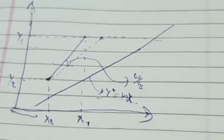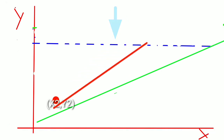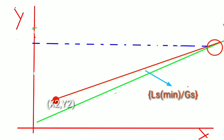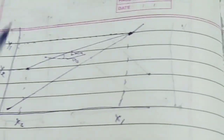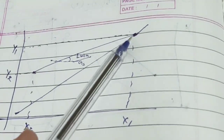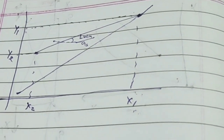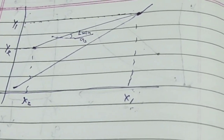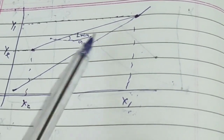From the animation, the final conclusion is: our operating line is touching the equilibrium line, and at that point you get the maximum X1 — the maximum composition of liquid you can obtain. The slope of the operating line in this case for maximum X1 is LS_minimum over GS.